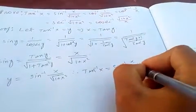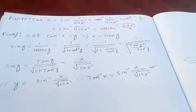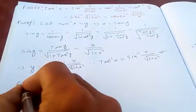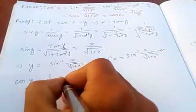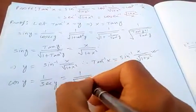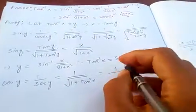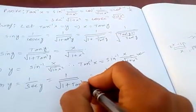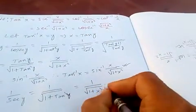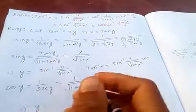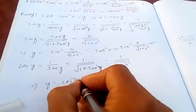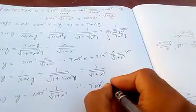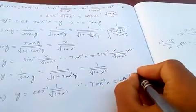For cosine: cos of y is one over sec of y, and sec of y is the square root of one plus tan squared y, which is the square root of one plus x squared. So cos y is equal to one over the square root of one plus x squared. Therefore y equals cos inverse of one over the square root of one plus x squared, so tan inverse of x equals cos inverse of one over the square root of one plus x squared. This is the second proof.